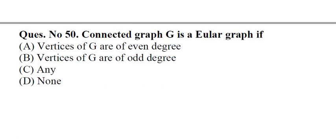Question number 50: Connected graph G is a Euler graph if A. Vertices of G are of even degree, B. Vertices of G are of odd degree, C. Any, D. None. Answer: A, Vertices of G are of even degree.